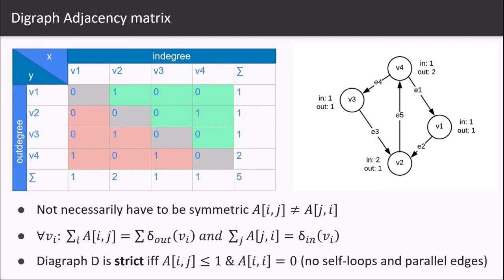A digraph is strict if and only if a_ij, which is representing the green and the red boxes in the matrix, is less than or equal to one but greater than zero, and a_ii, which is the gray curved line in the matrix, is zero. That indicates that there are no self-loops and parallel edges.